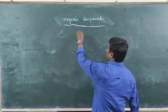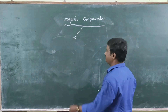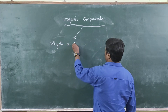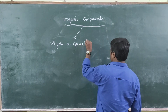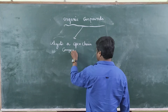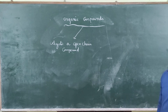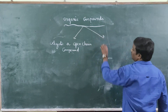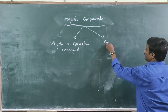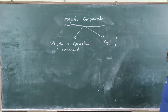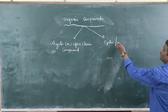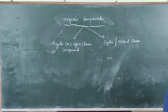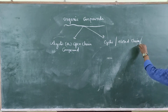Organic compounds are classified as acyclic or open chain compounds and cyclic or closed chain compounds. Acyclic compounds are also called open chain compounds, while cyclic compounds are called closed chain compounds.